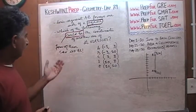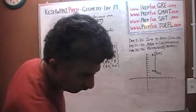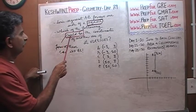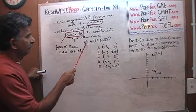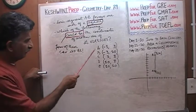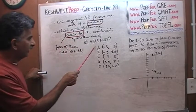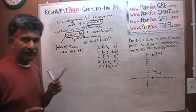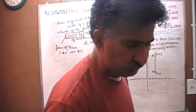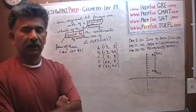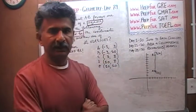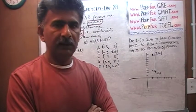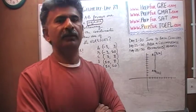Now listen. The question is which of the following could be the coordinates of another vertex. 'Could be' tells us that 4 of these 5 cannot be correct. The easiest and simplest way to figure out which one qualifies as a vertex of the square is to simply plot them out and see where they fall.